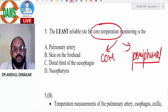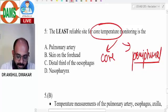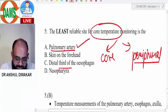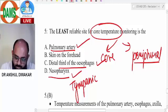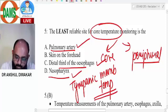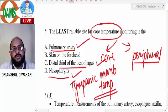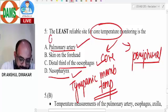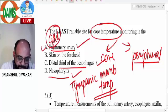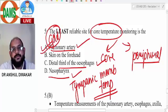There are different techniques: pulmonary artery temperature measures core body temperature, distal one-third of esophagus measures core body temperature, nasopharynx measures core body temperature, and tympanic membrane temperature also measures core body temperature. Most reliably, or gold standard for measurement of core body temperature is pulmonary artery.